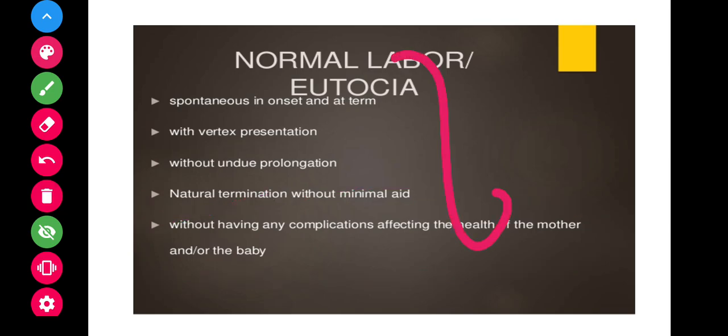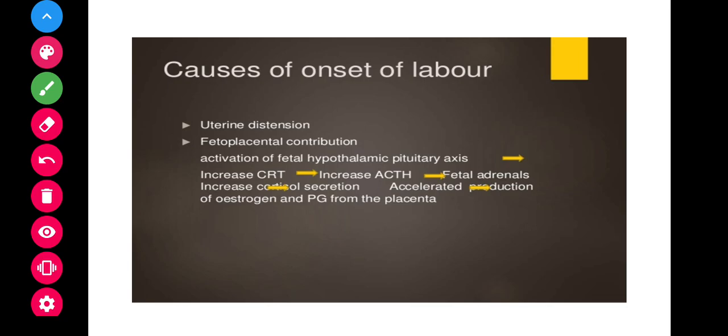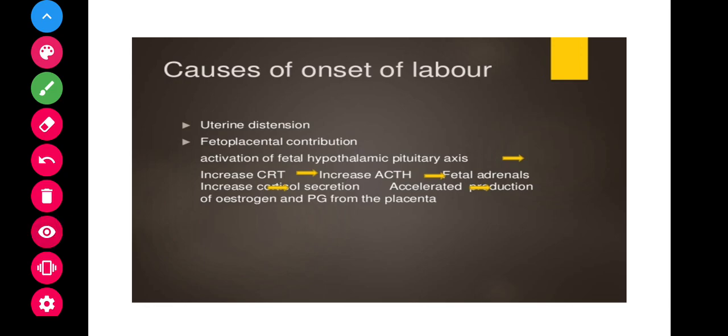Let us see the causes of onset of labor. The first cause is uterine distension and fetoplacental contribution. Here, activation of the fetal hypothalamic-pituitary axis occurs, which increases corticotropin-releasing hormone (CRH), which then increases ACTH — adrenocorticotropic hormone — which accelerates the production of estrogen and prostaglandins from the placenta.